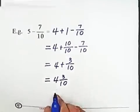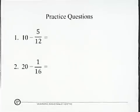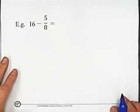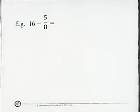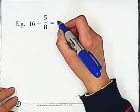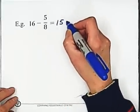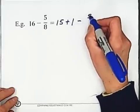Second example, 16 minus 5 over 8. Borrow one from 16. So we have 15 plus 1 minus 5 over 8.